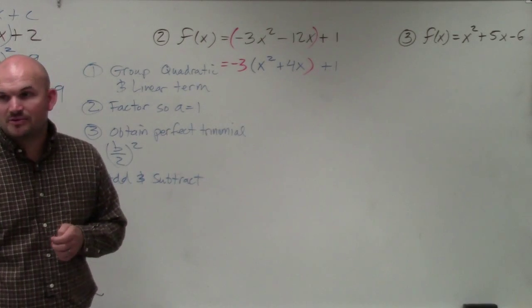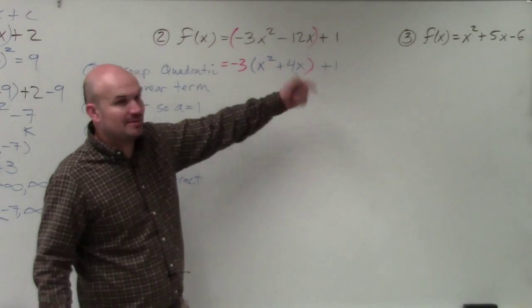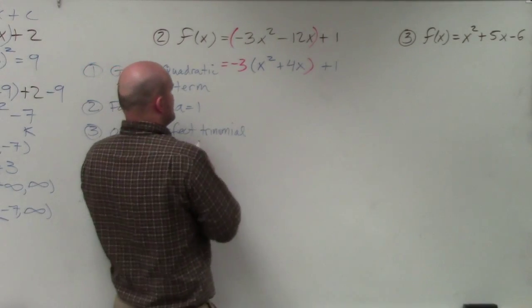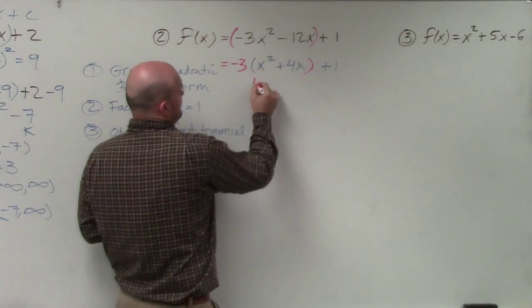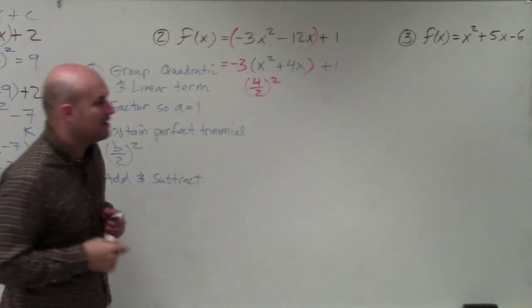Does everybody follow me with my factoring skills? OK. Now I can do b divided by 2 and square it. So I do 4 divided by 2 squared. 4 divided by 2 is 2. 2 squared is 4.